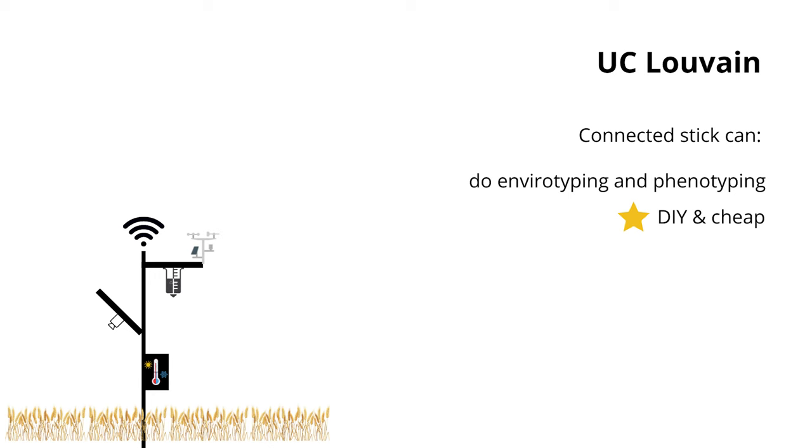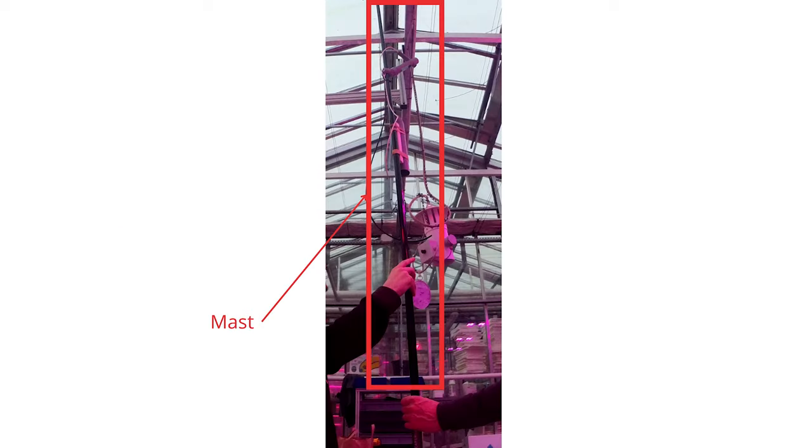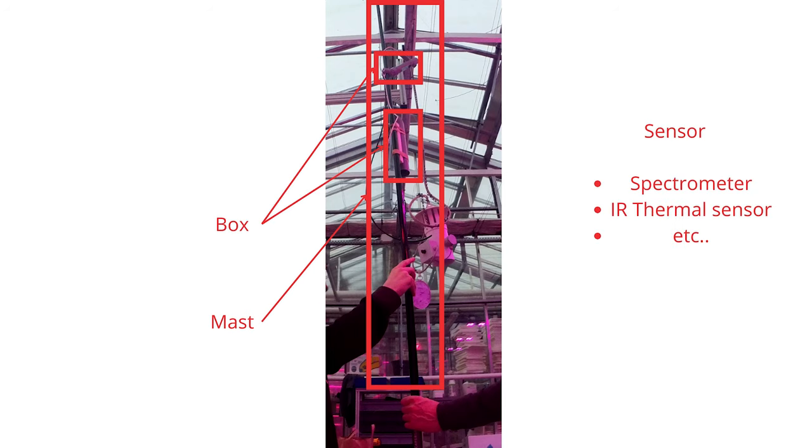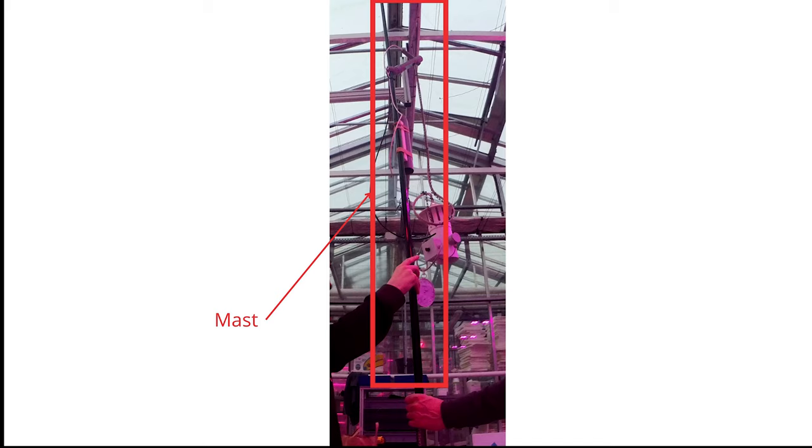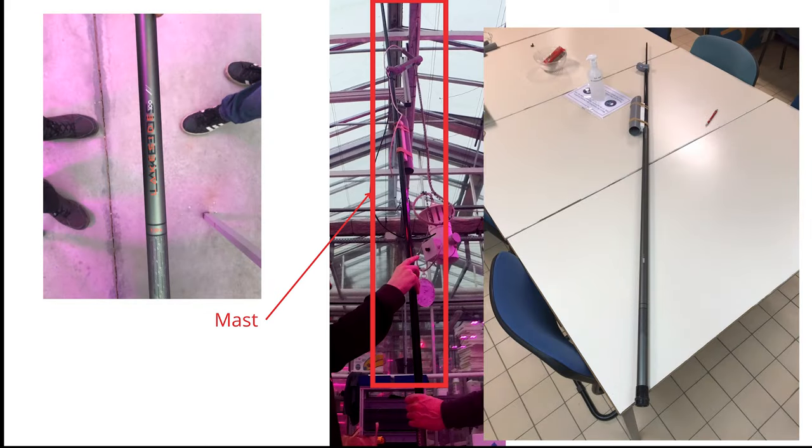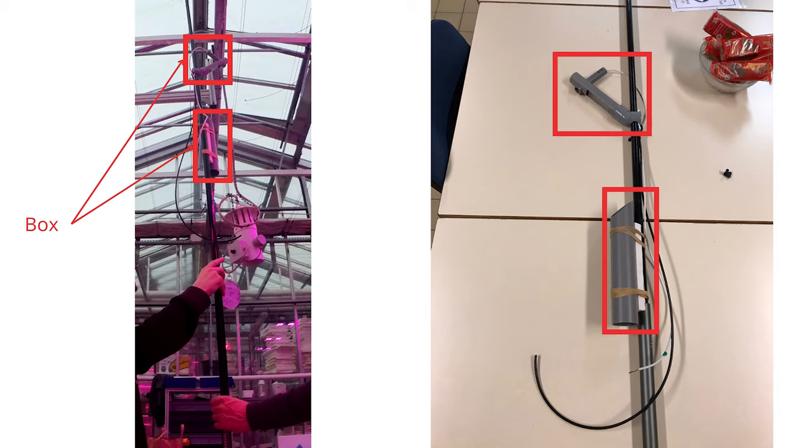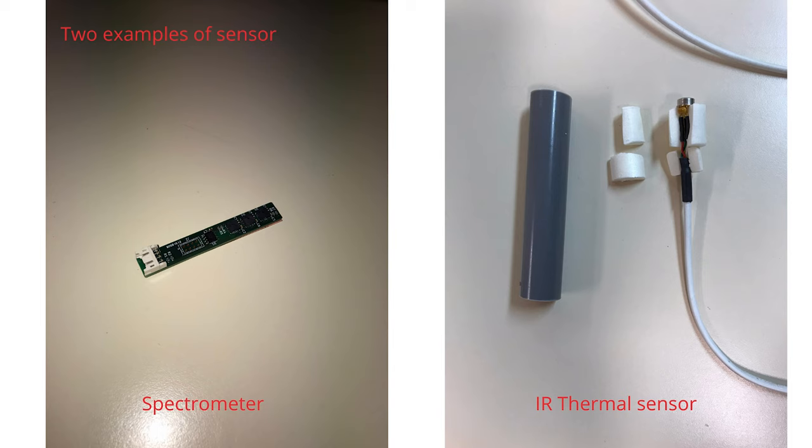The stick normally looks like this. It consists of a mast, a box and a sensor. The mast is a carbon fiber fishing rod found in stores. The boxes are PVC tubes found in DIY stores, and the sensors are from online sales sites.